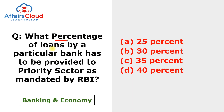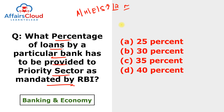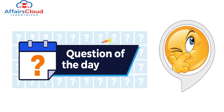Moving to the question of the day from 23rd February: What percentage of loans by a bank must be provided to the priority sector as mandated by the RBI? There are many categories under priority sector including agriculture, housing, education, social infrastructure, renewable energy, export credit, MSMEs, and others. According to RBI, 40% of loans should be given to the priority sector.